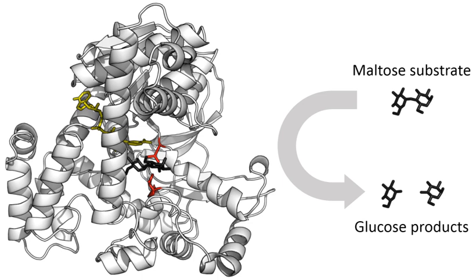In 1958, Daniel Koshland suggested a modification to the lock-and-key model. Since enzymes are rather flexible structures, the active site is continuously reshaped by interactions with the substrate as the substrate interacts with the enzyme. As a result, the substrate does not simply bind to a rigid active site; the amino acid side chains that make up the active site are molded into the precise positions that enable the enzyme to perform its catalytic function. In some cases, such as glycosidases, the substrate molecule also changes shape slightly as it enters the active site. The active site continues to change until the substrate is completely bound, at which point the final shape and charge distribution is determined. Induced-fit may enhance the fidelity of molecular recognition via the conformational proofreading mechanism.